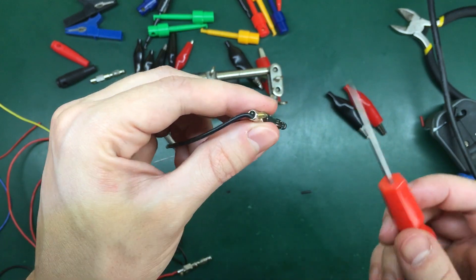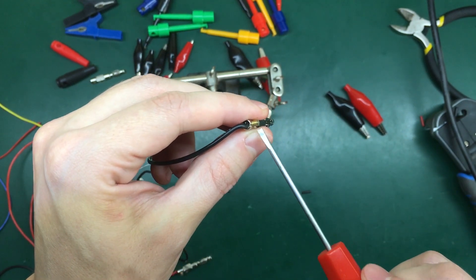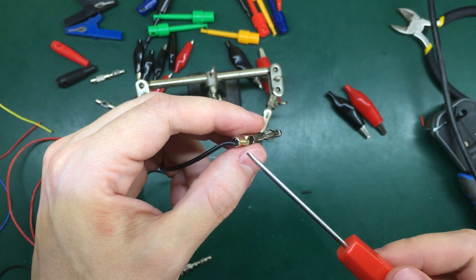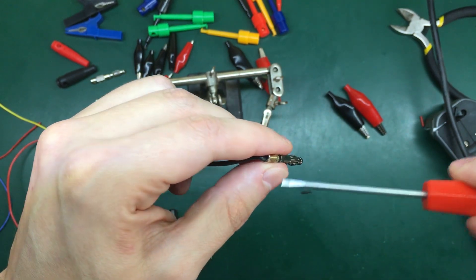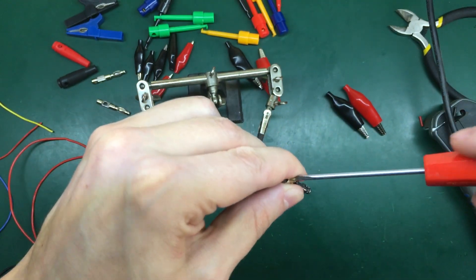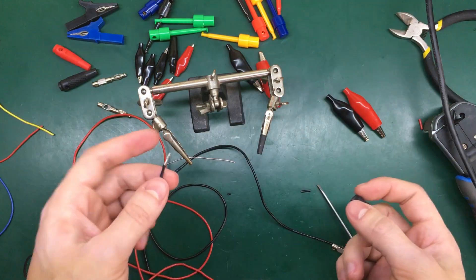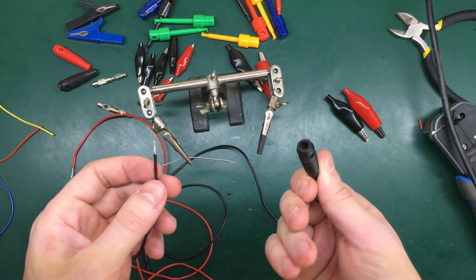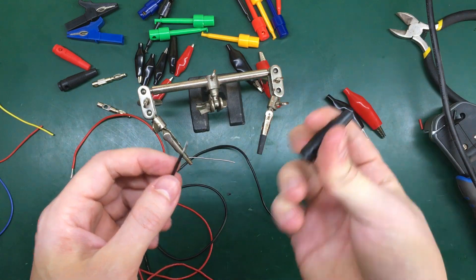If you would like you can also solder directly to the banana jack but I don't think it's really necessary, this securing screw really helps for making a good connection. The next thing to do is to insert these silicone protective covers.